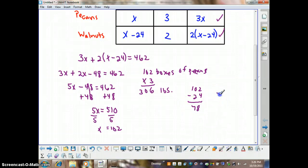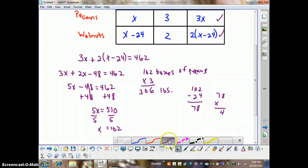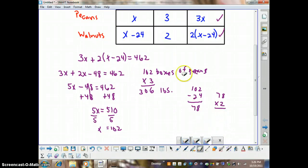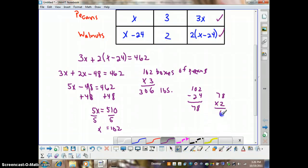And we know that those each weigh 3 pounds. The walnuts are heavier than the pecans. And we'll multiply that—oh, I just realized I made a mistake. They're 2 pounds per box. They're actually lighter. So let's fix that. So 78 boxes of walnuts times 2 pounds per box is going to give us 156 pounds.